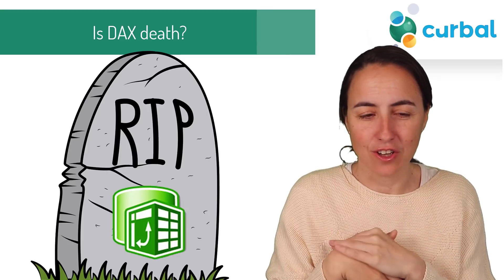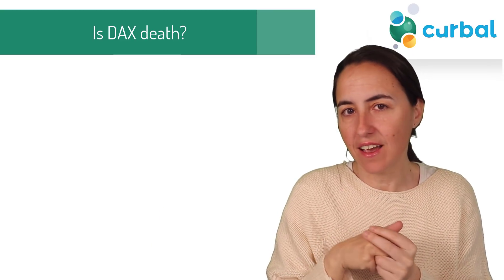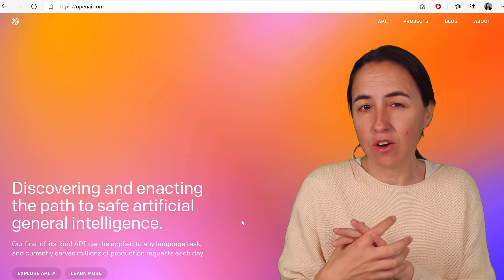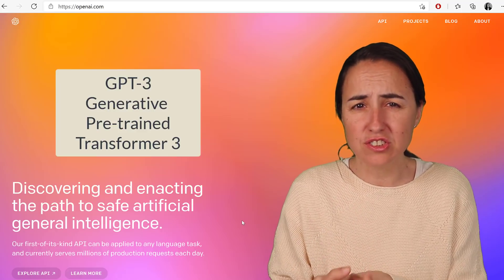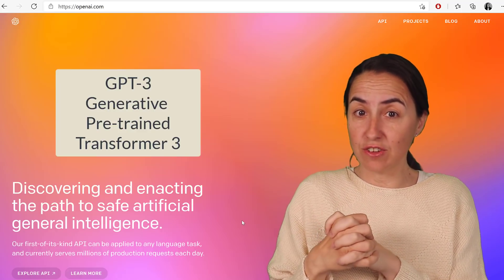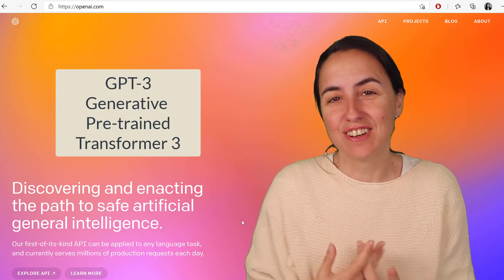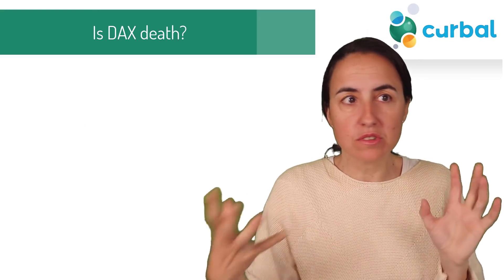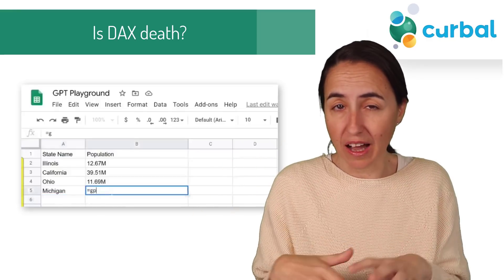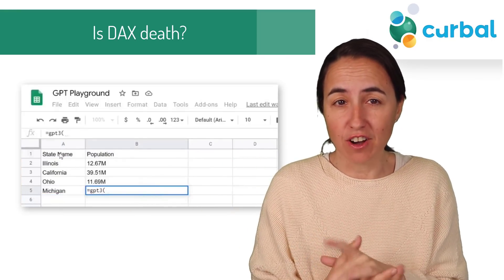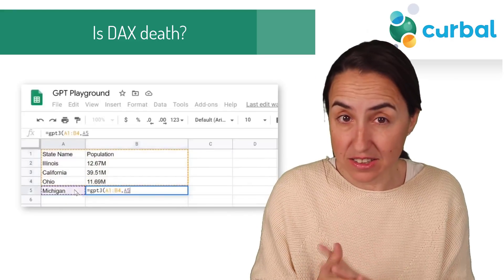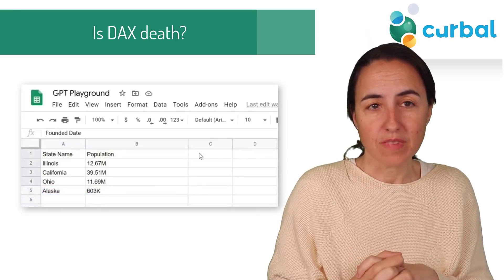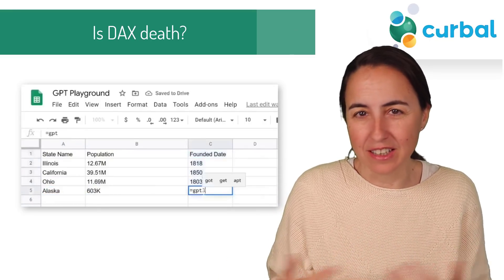Now for the meat of the update — the announcement of the death of DAX. There is an organization called OpenAI, and one of the things that has come out of it is something called GPT-3, which stands for Generative Pre-trained Transformer 3 — a natural language algorithm. I actually applied for access to it but never got it; just a handful of companies have access.